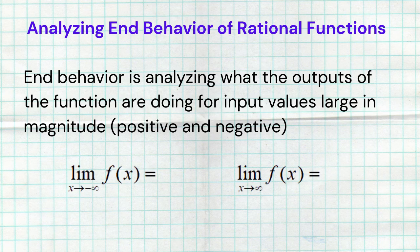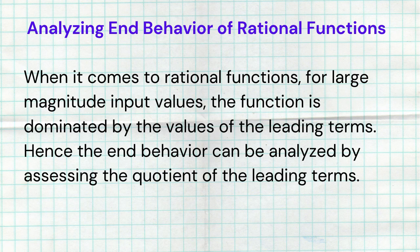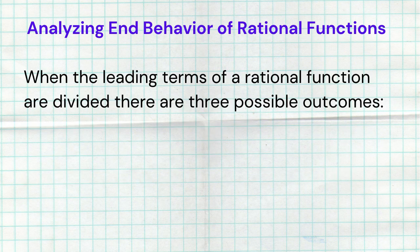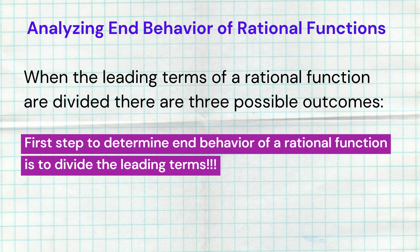When it comes to analyzing the end behavior of rational functions, we really want to focus on the leading terms — the leading terms of the numerator and the leading terms of the denominator. Because for large magnitude input values, the function is dominated by the values of the leading terms. Hence, the end behavior can be analyzed by assessing the quotient of the leading terms. When you assess that quotient, three possible things can happen. To find the end behavior, the very first thing you have to do is divide your leading terms: take the leading term of the numerator divided by the leading term of the denominator.